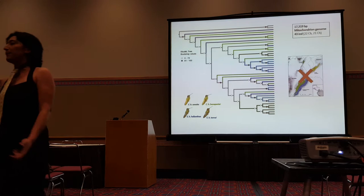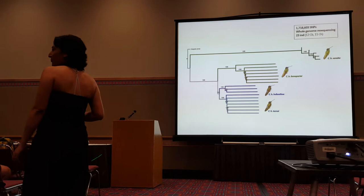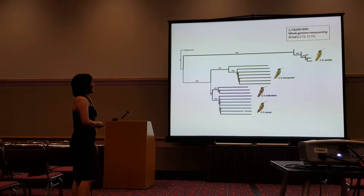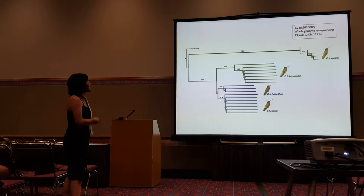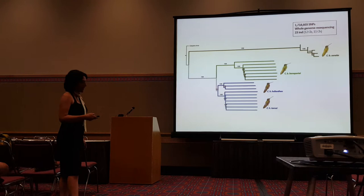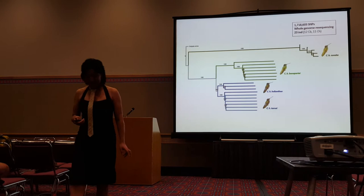But what happened when we looked at the SNPs from the nuclear genome? This is what we got, and it resolves things quite well. We recovered the pattern we saw previously with the UCEs: CH is nested inside CB, and all of them appear differentiated.